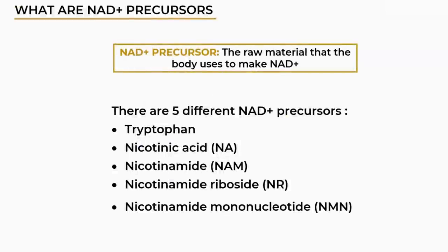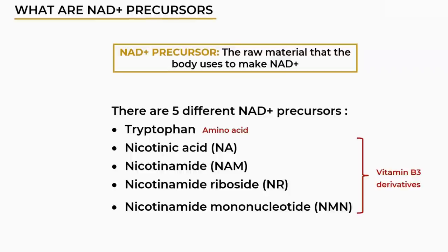So first of all, what are NAD precursors? Well, basically an NAD precursor is the raw material that the body uses to make NAD. It's like the building blocks for NAD, and there are five different precursors that the body can use: tryptophan, nicotinic acid, nicotinamide, nicotinamide riboside, or nicotinamide mononucleotide.